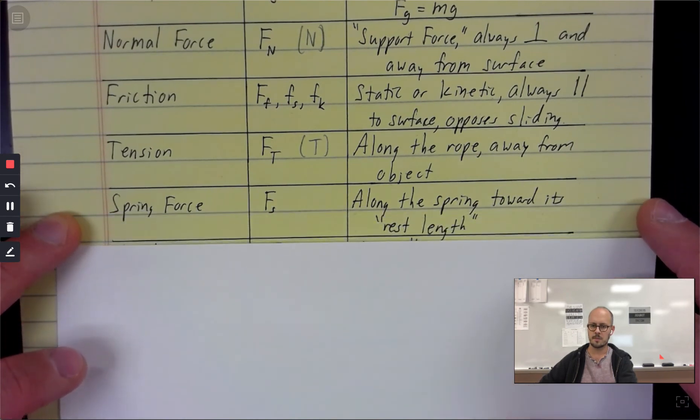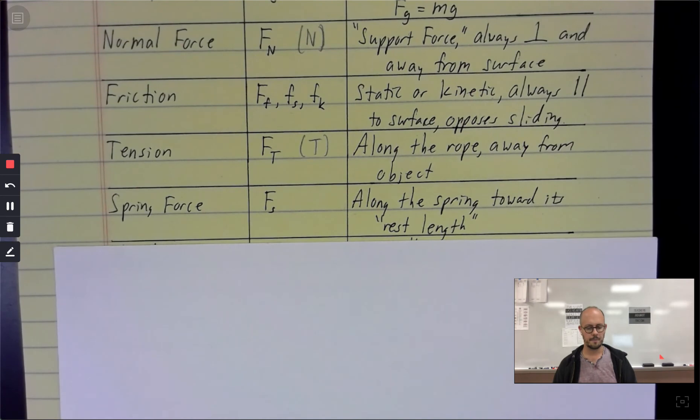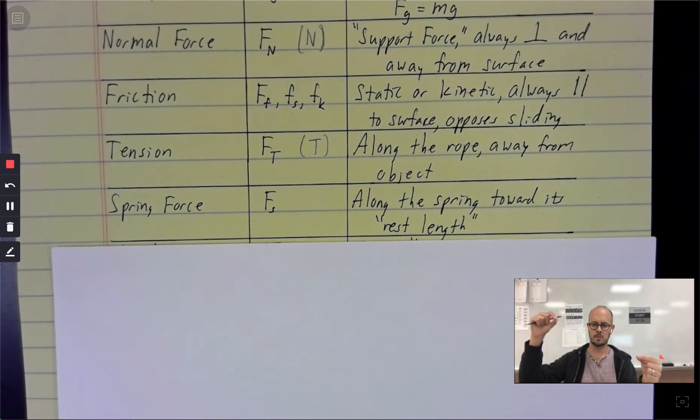And then the last of the specific ones is the spring force. This is F sub S. And so this is for things that can stretch a lot. So things that are elastic in nature, especially a spring that you can pull to more or less any length you want. When you pull on a spring, you are again stretching the bonds between atoms.